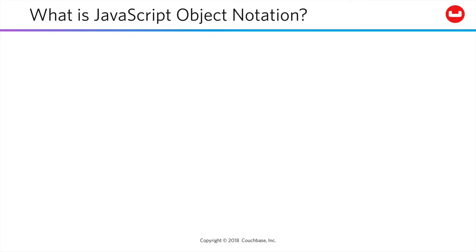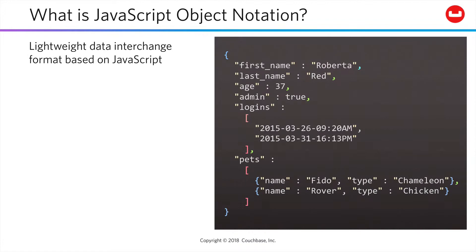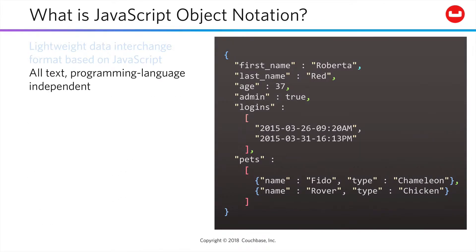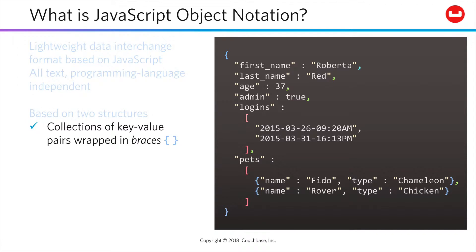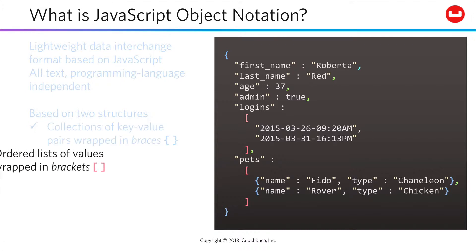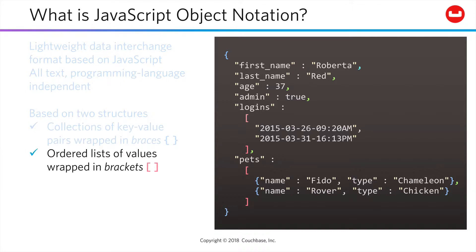JSON has emerged as a lightweight data interchange format. It's based on JavaScript, but it's nothing but a language-independent markup format for describing data structures. There are two key formats used: collections, often also called objects or dictionaries, which are sets of key-value pairs wrapped in braces, and ordered lists of values, often also called arrays, which are wrapped in brackets.